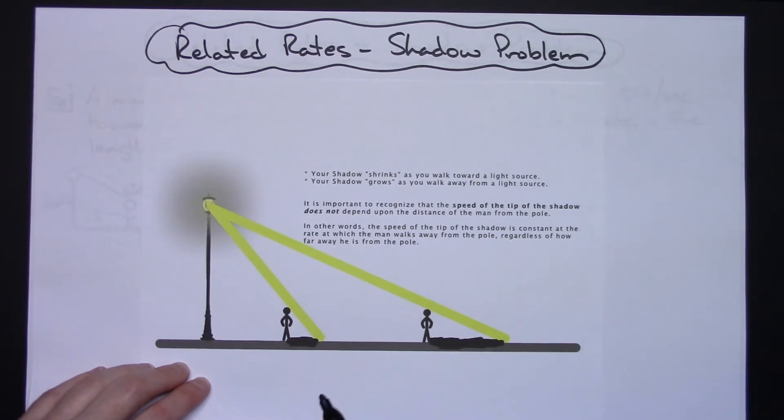Now something that the particular example I'm going to do here doesn't deal with but other problems might is the tip of the shadow—the speed of the tip of that shadow. It's important for you to recognize that the speed of the tip of the shadow does not depend upon the distance the man is from the pole.